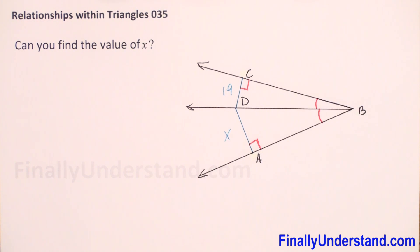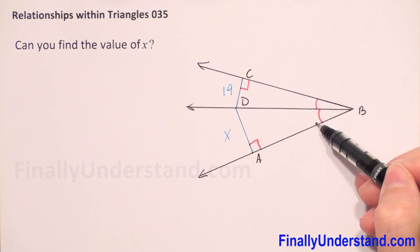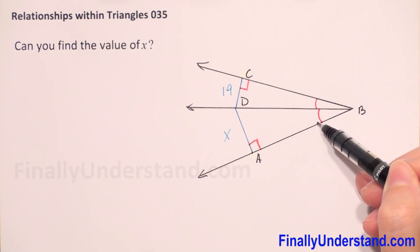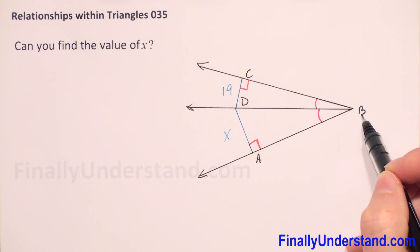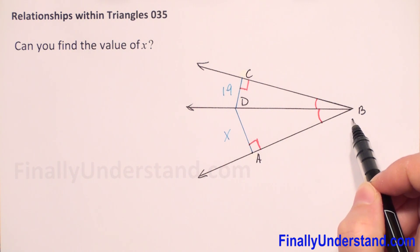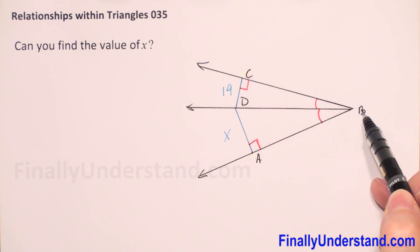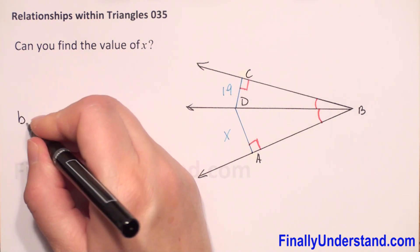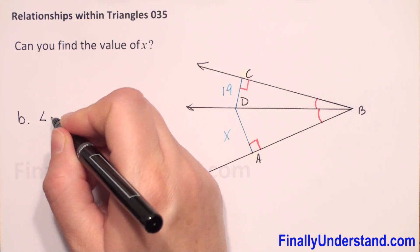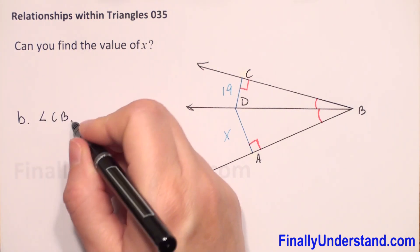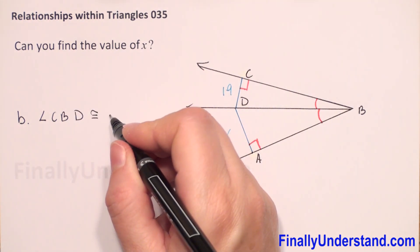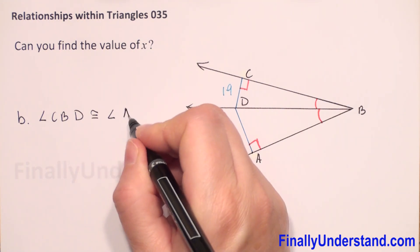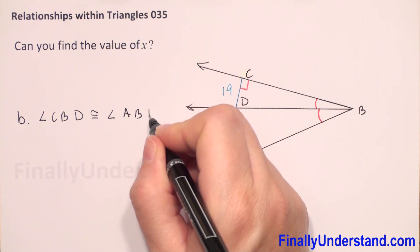We have given that these two angles are congruent. So it means that ray BD bisects angle CBA. Let me write: angle CBD is congruent to angle ABD.